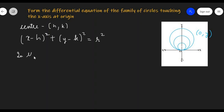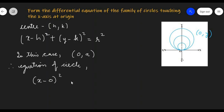In this case, let us say that the circles have the center at (0, a). So, we are going to have the equation of the circle as (x - 0)² + (y - a)² = a², where the radius will also be a.